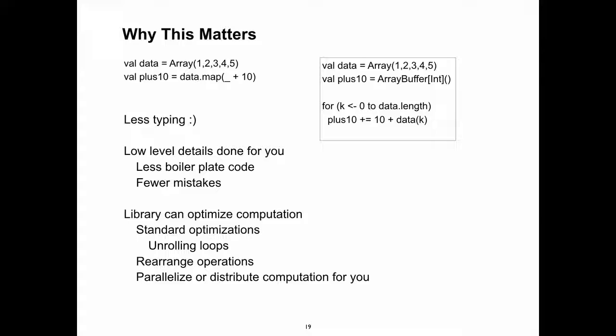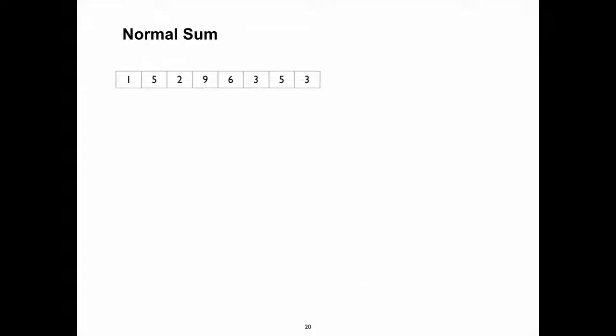That's the case for functional programming generally. But for this course, the most important reason is that the map, filter, and reduce functions can be optimized for you. The compiler can unroll loops, do standard optimizations, rearrange operations for efficiency, and distribute a map computation across 10 machines instead of one. You don't have to worry about which data goes to which machine, because you're not writing 'for i equals 1 to n' — the library handles that for you.